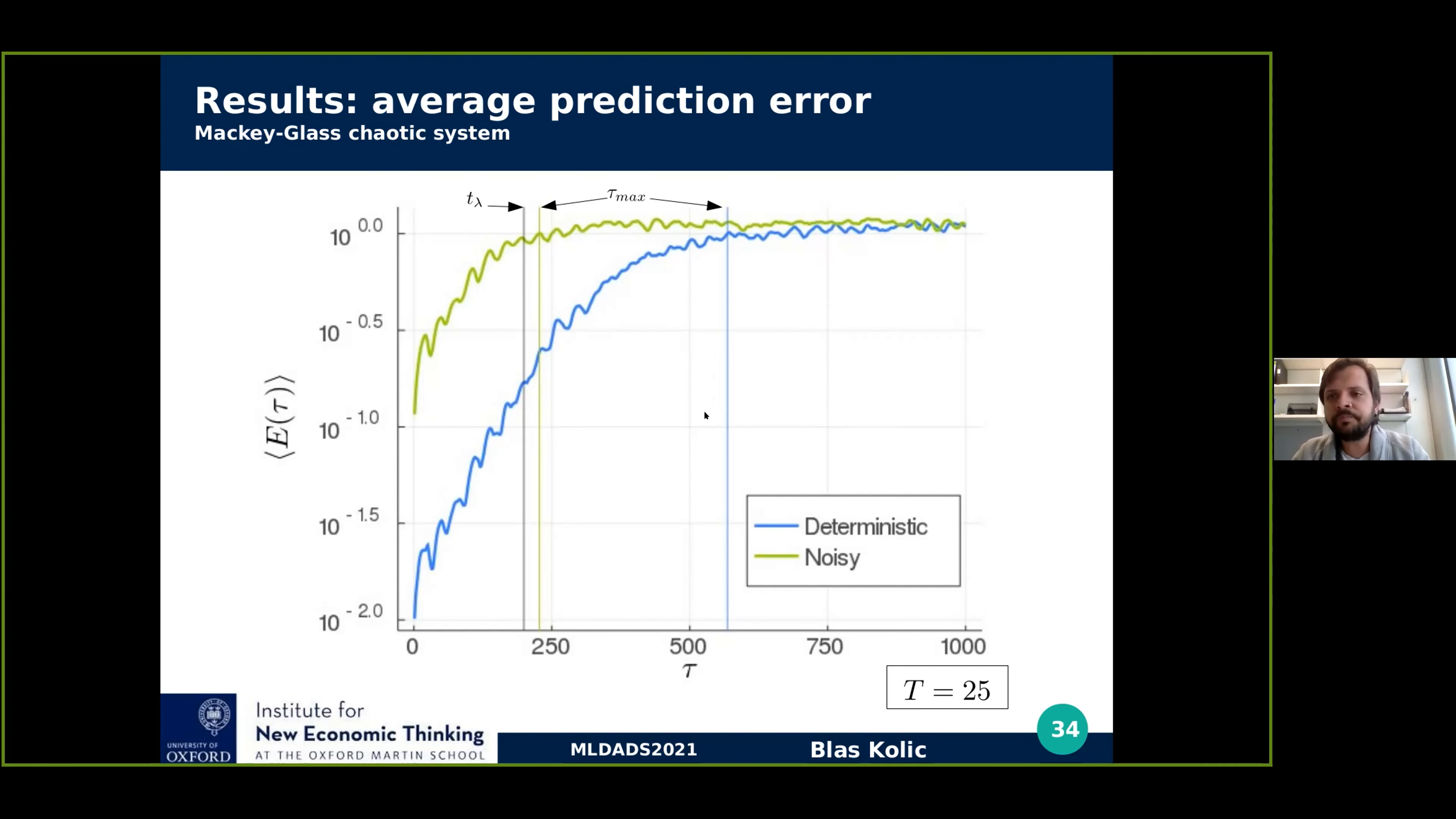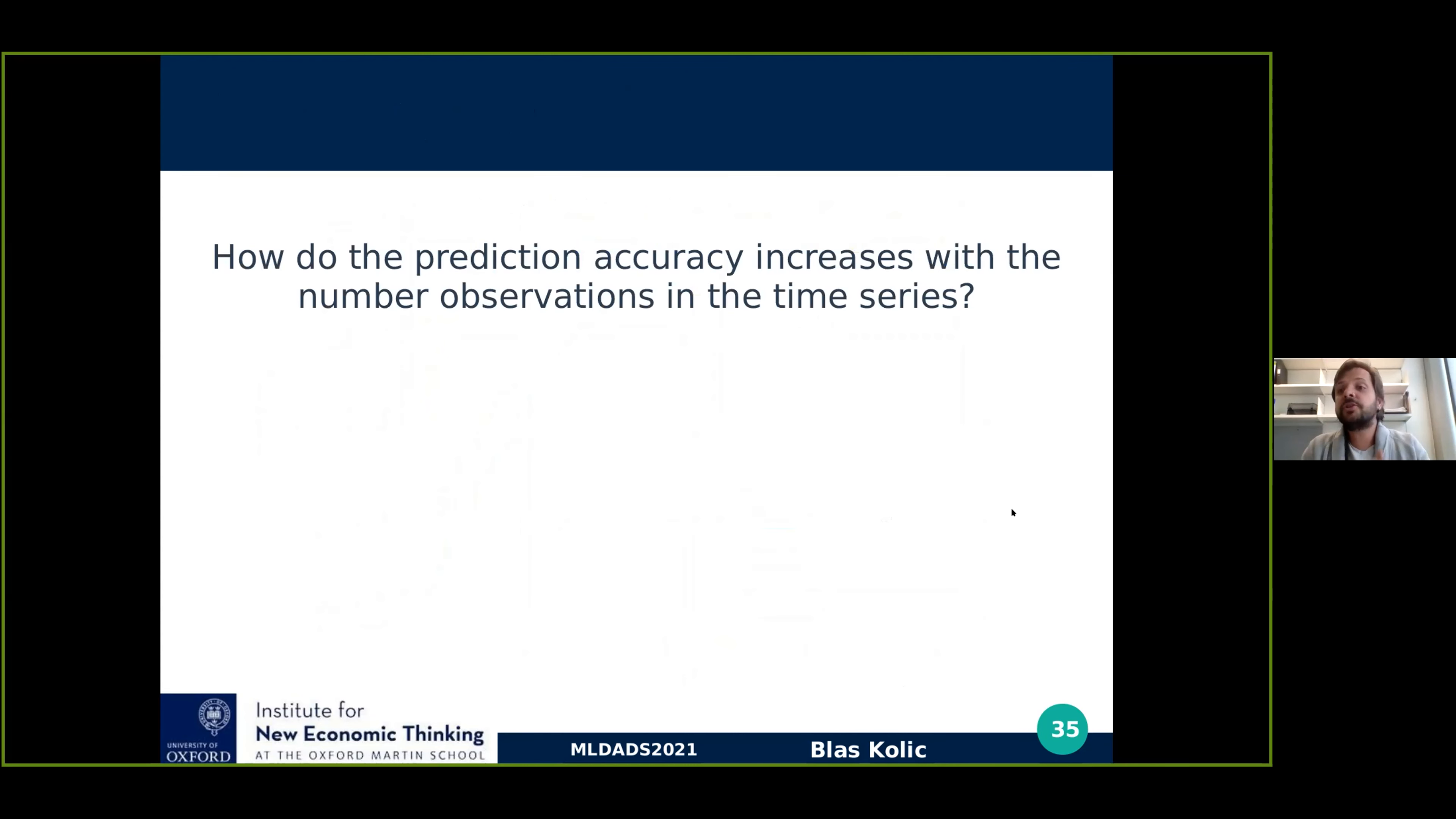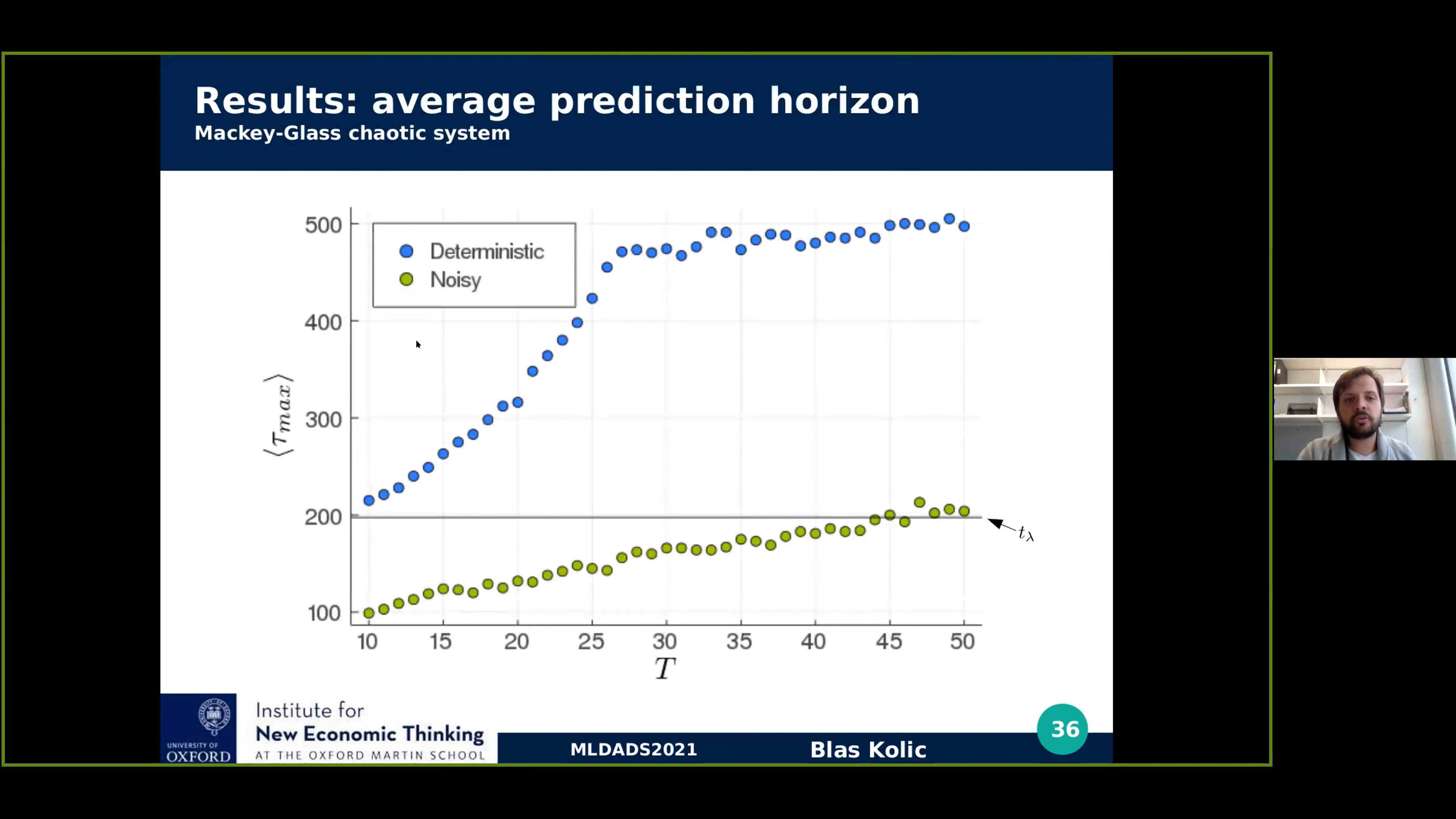So the next question we ask is, how does the number of observations affect accuracy? And so we do a lot of experiments and average out for different lengths of the time series. Here in this plot, we show the results. We plot in the x-axis the length of the time series, the number of observations t, against the prediction horizon of the system for noiseless, blue and noisy time series. We see several things. First, in the noisy case, we see a steady linear increase, meaning that every extra observation helps the accuracy of our methodology. Here in the 40-45 mark, it actually gets better than the Lyapunov characteristic time.